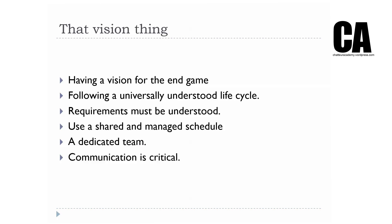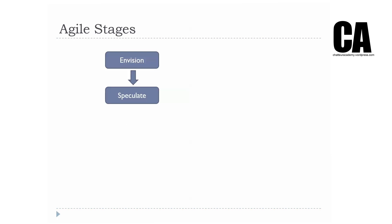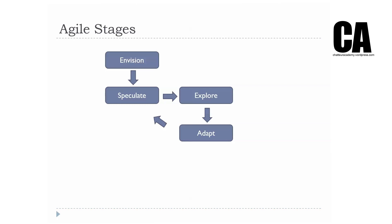You have to have a vision for the end game. You all have to understand the life cycle of the project. All requirements must be understood by all team members. You must use a shared and managed schedule that all team members have access to. You need a dedicated team, and communication is crucial for agile methodology. The agile stages are: vision, speculate, explore, adapt, and close.